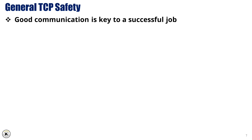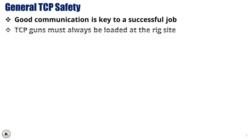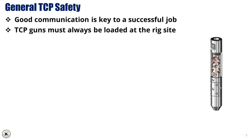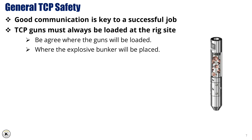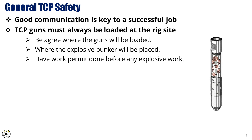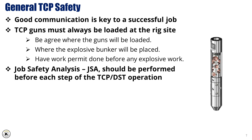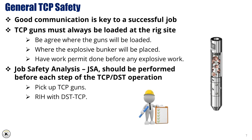General TCP safety. Clear communication is essential at every stage of the operation to ensure smooth coordination and prevent any mishaps. TCP guns must always be loaded at the rig site, and all team members must be in agreement about where the guns will be loaded to avoid confusion or miscommunication. It's also important to decide in advance where the explosive bunker will be placed. Before any explosive work is carried out, a work permit must be obtained to ensure compliance with safety protocols and relevant regulations. A Job Safety Analysis (JSA) should be performed before each step of the TCP and DST operation to identify potential hazards and mitigate risks. This includes steps such as picking up the TCP guns, running in hole with the DST-TCP, perforating the well, killing the well, and finally rigging down the TCP guns.